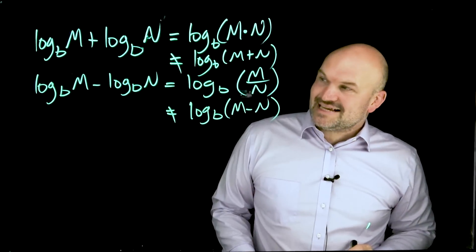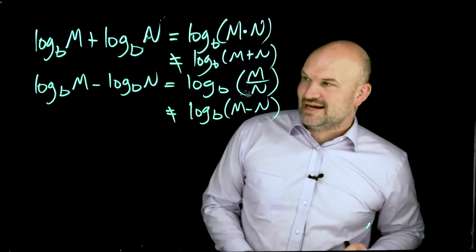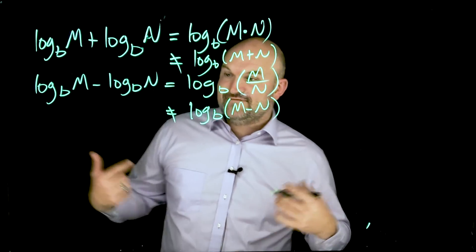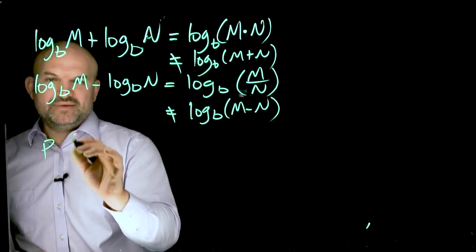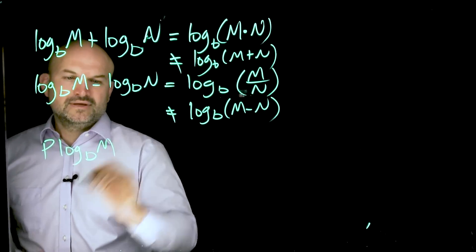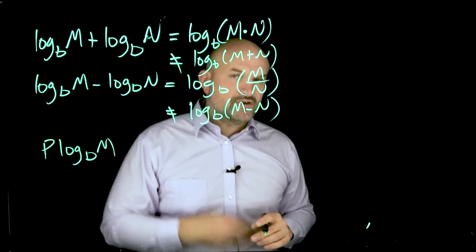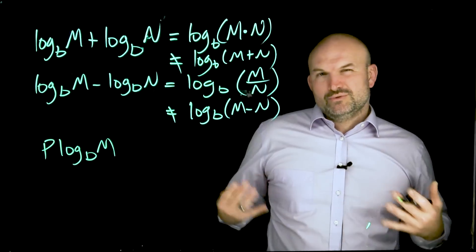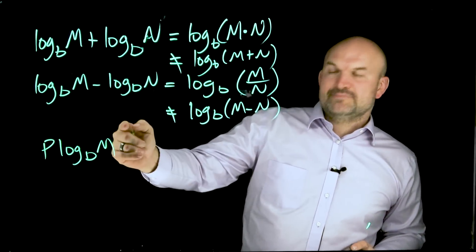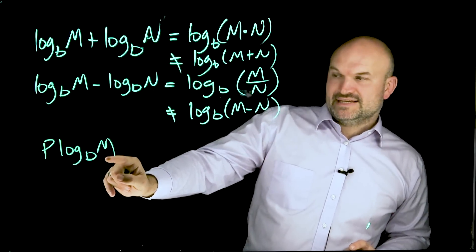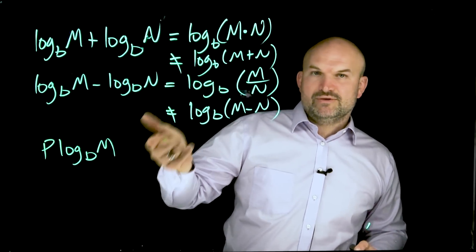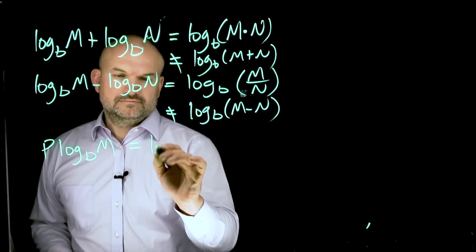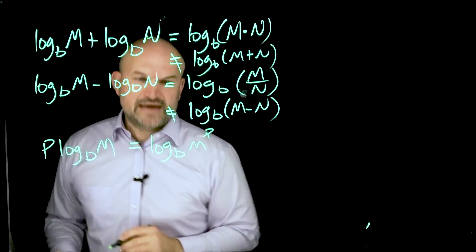And now the last thing that we want to take a look at is sometimes we're going to have a value that is going to be in front of our logarithm, and let's call that value P. So if we have a value that is in front of our logarithm, what we can actually do to condense it down is we can rewrite that as the power of our argument inside of our logarithm. So if you have something like this, whenever you have a number in front, you can just rewrite that as the power.